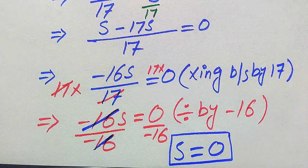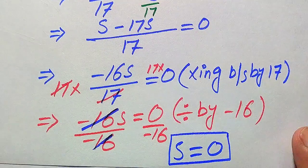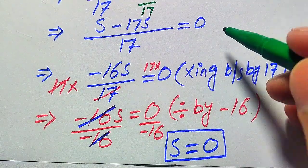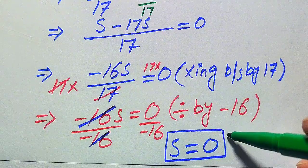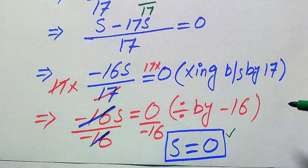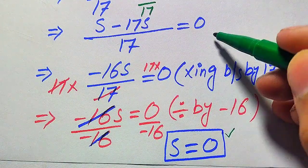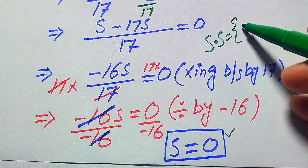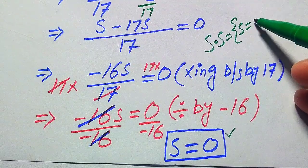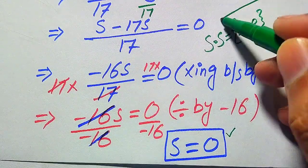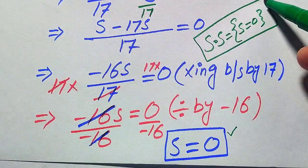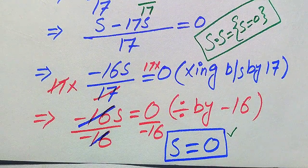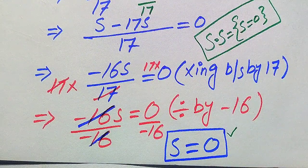Finally, in the second method we again get the value of s = 0. In the first method we already verified that this value satisfies the given equation. Therefore, the solution set of this question is {s = 0} — this is the only solution. Thank you so much for watching this video. Please subscribe to my channel for more exciting videos.